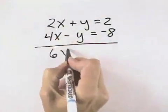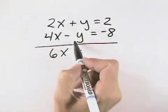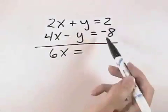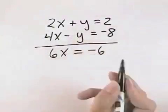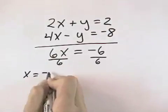2x plus 4x is 6x. The y's cancel each other out because one's positive and one's negative. And then 2 plus negative 8 is negative 6, so at this point, if we divide by 6, we can see that x equals negative 1.